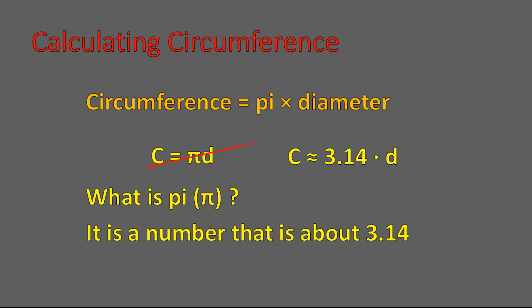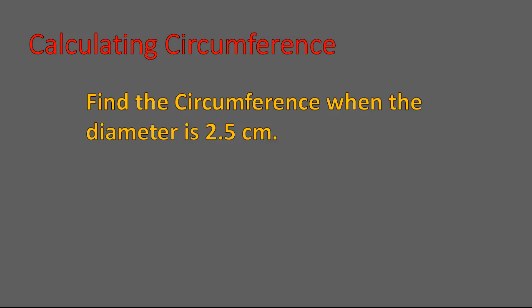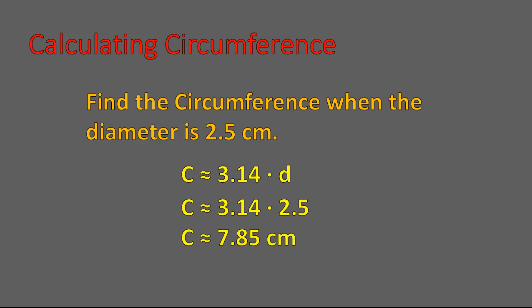That makes our equation very simple — it's just a simple multiplication question. I'll show you one example of calculating circumference, and then I'll have one for you to practice. If I wanted to find the circumference when the diameter is equal to 2.5, this is what I would do. The circumference equals 3.14 times the diameter. I know my diameter is 2.5, so I multiply those two numbers and get 7.85 centimeters as my circumference — that's the distance around the outside of the circle. It's just multiplying 3.14 times whatever the diameter is.